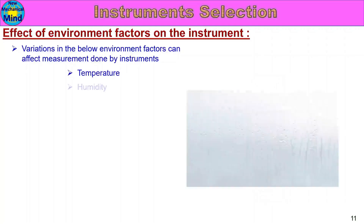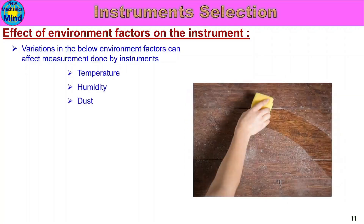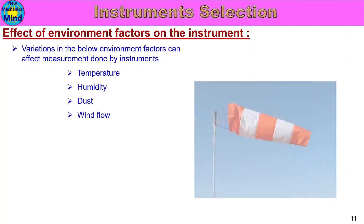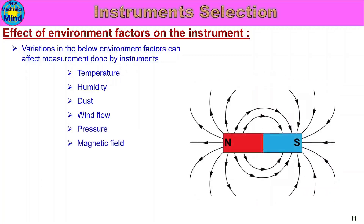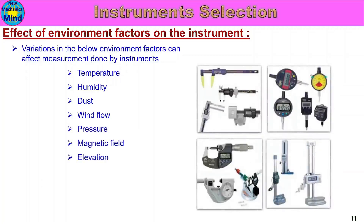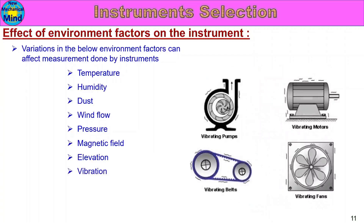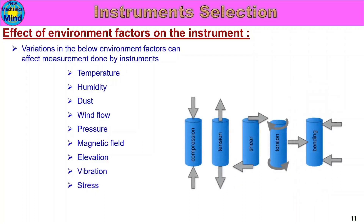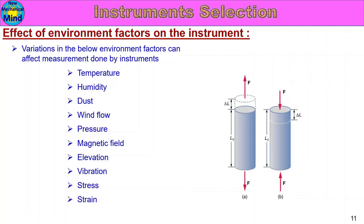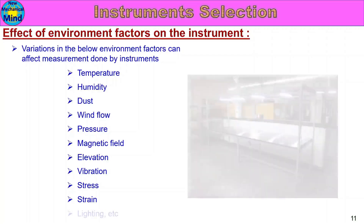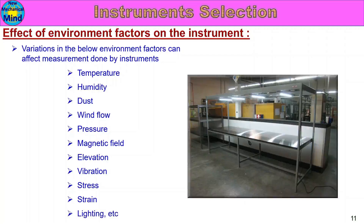Environment factors that affect instrument measurements include: temperature, humidity, dust, wind flow, pressure, magnetic field, elevation, vibration from surrounding areas, stress applied to the instrument, strain within the instrument, and lighting arrangement in the inspection area. All these environment factors can influence measurements and cause variation.